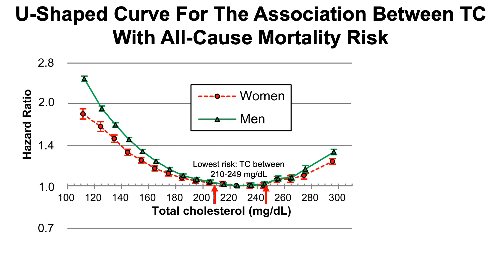Also notice that risk of death increases at levels lower than that — at all levels lower than 210. And all-cause mortality risk also increases above 249. Interestingly, having levels less than about 140 in women and about 150 in men, the risk of death for all causes is actually higher than having very high levels of cholesterol, even up to 300. This data illustrates that lower cholesterol is potentially not better than higher cholesterol.